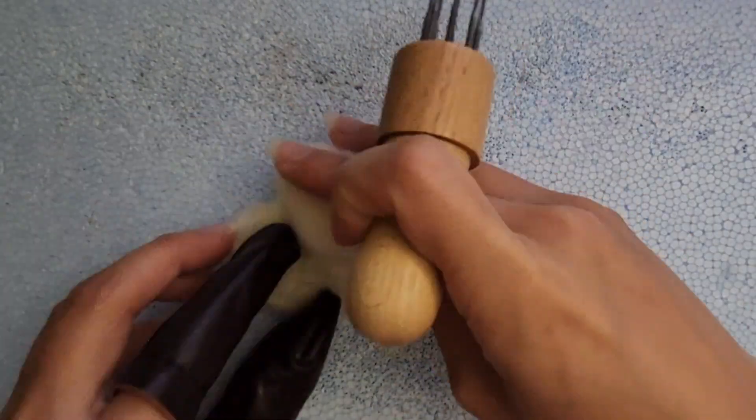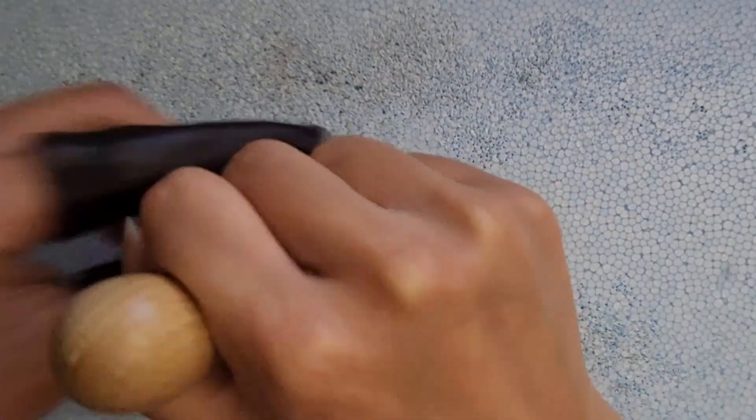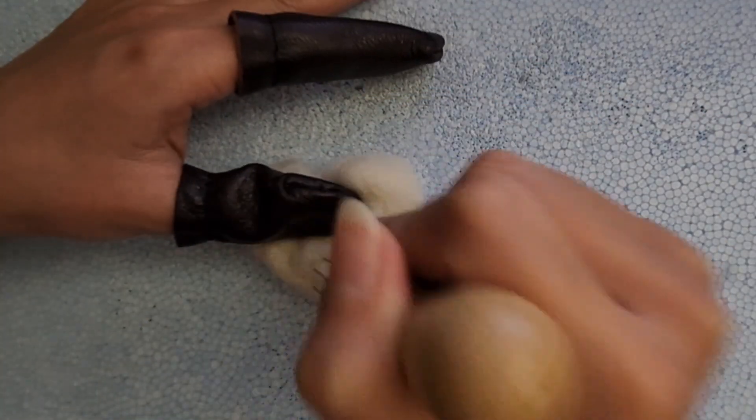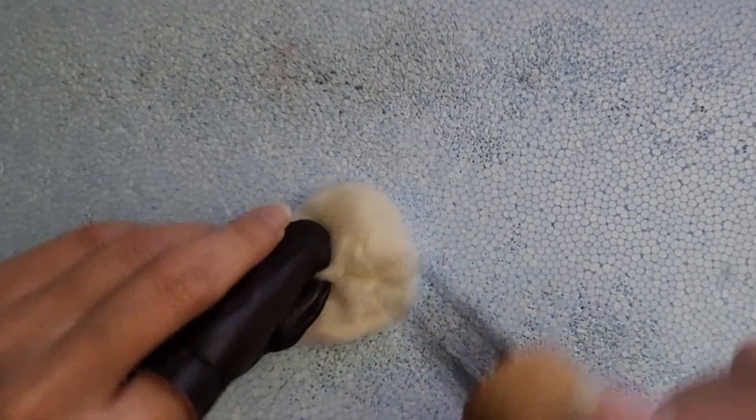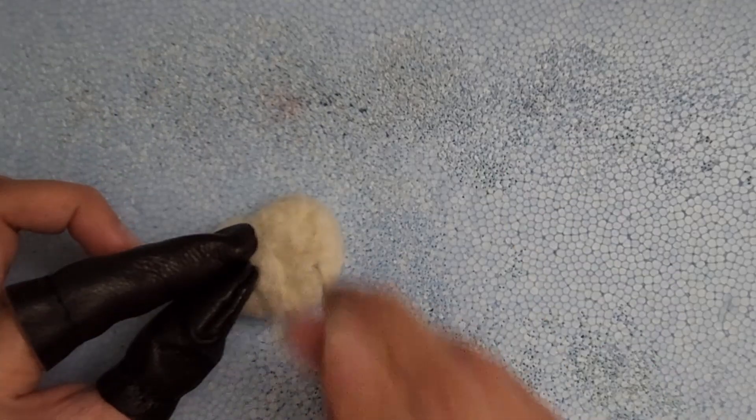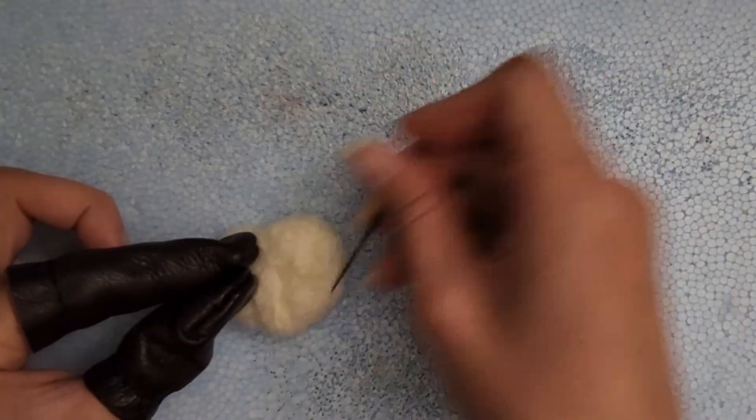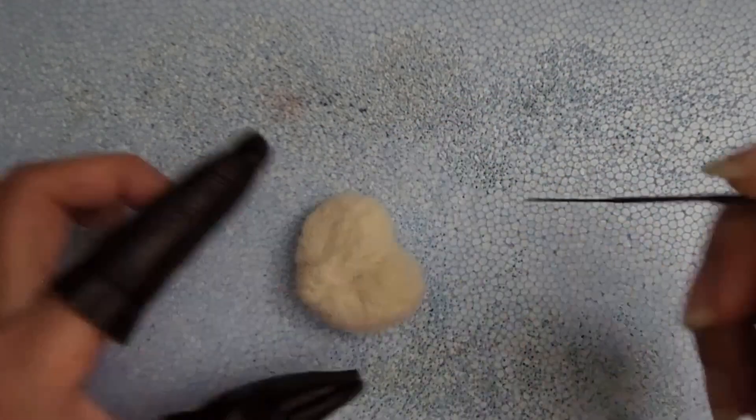For this step, you don't want to fully felt them so that you can still connect more wool together. The more you felt, the firmer the wool gets and becomes harder to reshape or manipulate. But at the same time, you don't want it to be too loose so that it can retain its shape for the most part. As you keep felting, this is what mine looked like after about 20 to 30 minutes of felting.